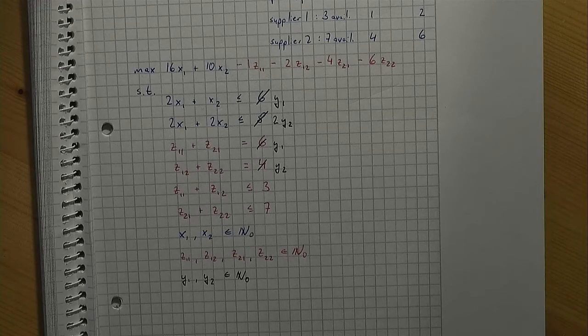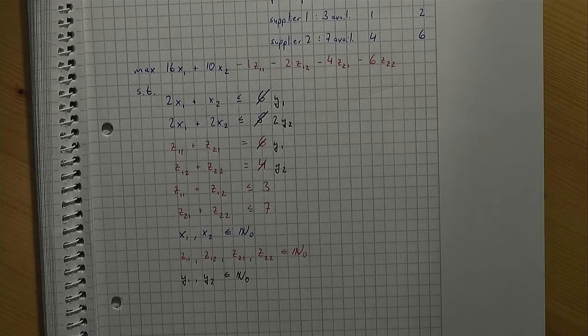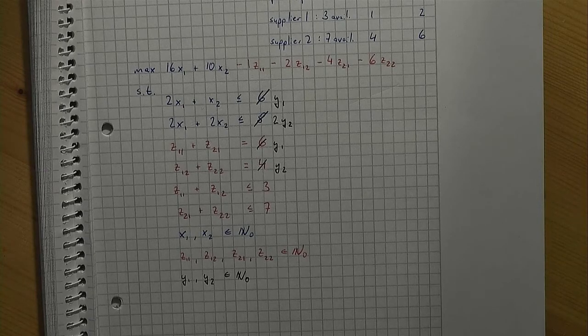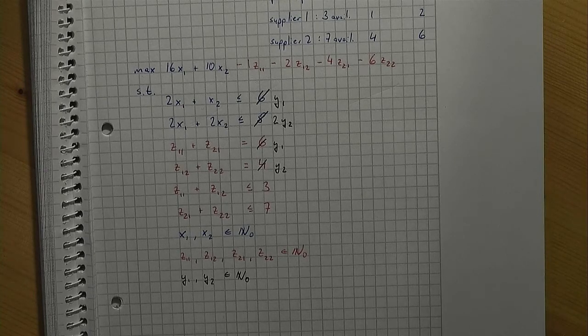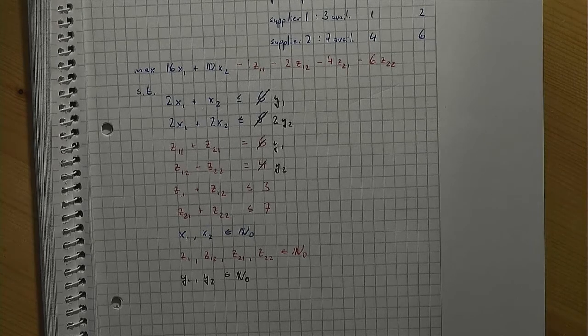The part that depends on the x variables contains y variables and the part that depends on the z variables contains y variables too. Due to the y variables, the two parts interact and are not independent anymore. Consequently, we cannot split this modified model into two smaller models.